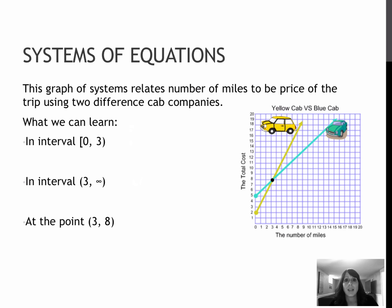So in the interval from zero to three miles, we can see that the blue cab company is the more expensive choice. What can we learn? In the interval from zero to three, we could say blue is more expensive, or we could say yellow is less expensive either way.